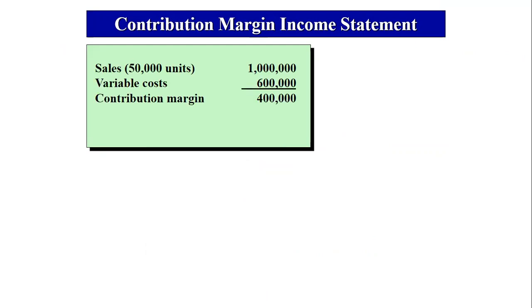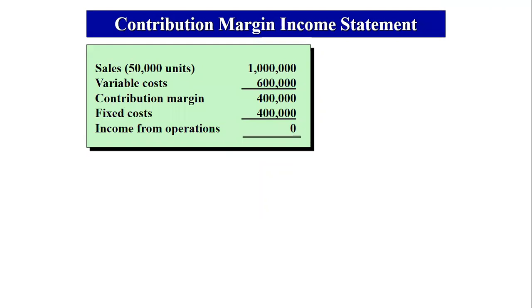Before getting to the break-even point, you need to understand the contribution margin income statement. Here, the cost of goods sold is separated into variable costs and fixed costs. In this example, you have sales of 50,000 units amounting to 1 million, variable cost of 600,000, contribution margin of 400,000, and fixed cost of 400,000 — resulting in no income from operations.